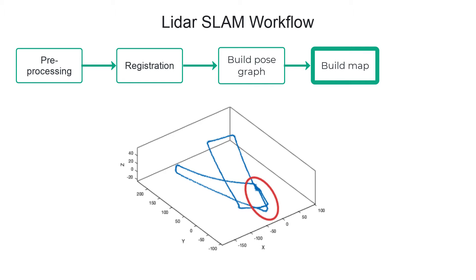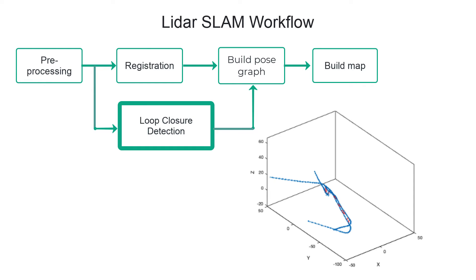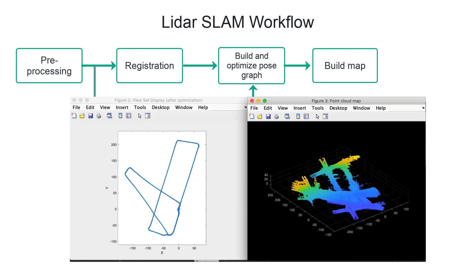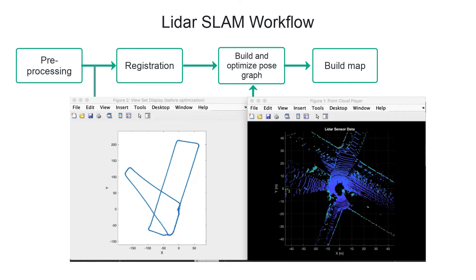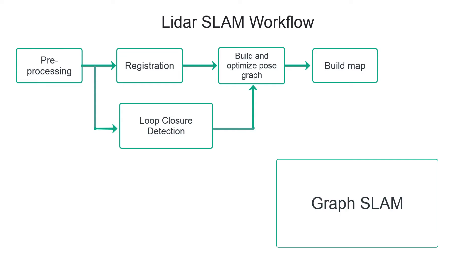In order to overcome this, we need to use a technique called loop closure detection. It is a technique where you can recognize previously visited locations and add this information to the pose graph. Subsequently, the pose graph is optimized to correct the drift. This algorithm of LiDAR SLAM shown here is popularly known as graph SLAM.